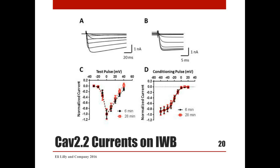This slide illustrates barium current conducted by recombinant N-type calcium channel recorded on IonWorks Barracuda in population patch clamp mode. Similar to manual electrophysiology, the current activated rapidly and inactivated slightly during the depolarizing pulse. The current-voltage relationship shows relatively steep voltage dependence, most likely resulting from imperfect voltage control on Barracuda. Stability over time was excellent. Steady-state inactivation was examined with a series of one-second conditioning pulses followed by a test pulse to zero millivolts. Fitting the Boltzmann equation to test pulse amplitudes indicated a half-inactivation voltage of approximately minus 20 millivolts, and steady-state inactivation was stable in time.